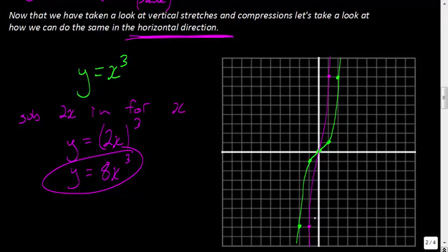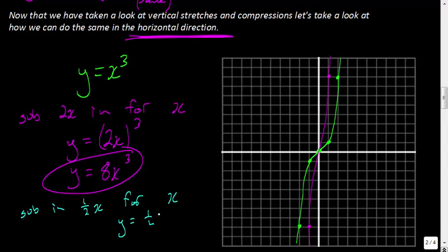Now let's do something different. Instead of putting in 2, let's put in the reciprocal of 2. We'll do the blue function. Let's substitute ½x in for x. So we'd have y = (½x)³. Now ½ cubed: cube the 1 to get 1, cube the 2 to get 8, giving us 1/8 x³.